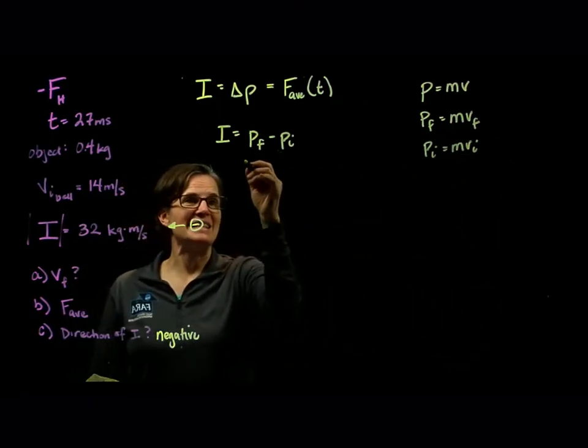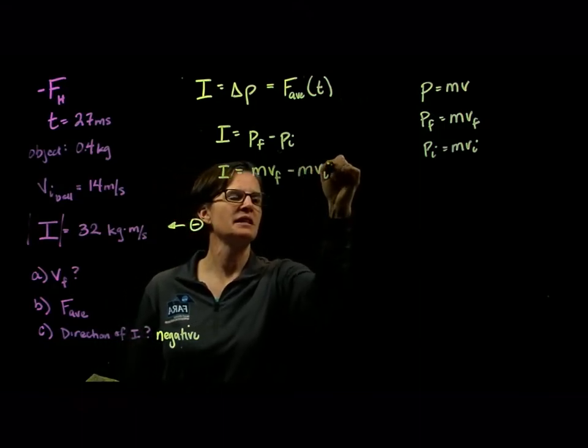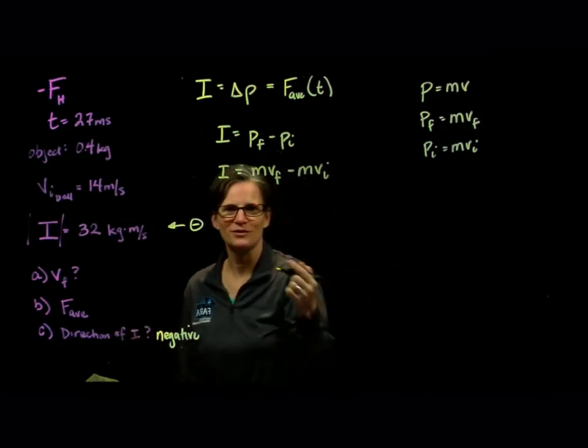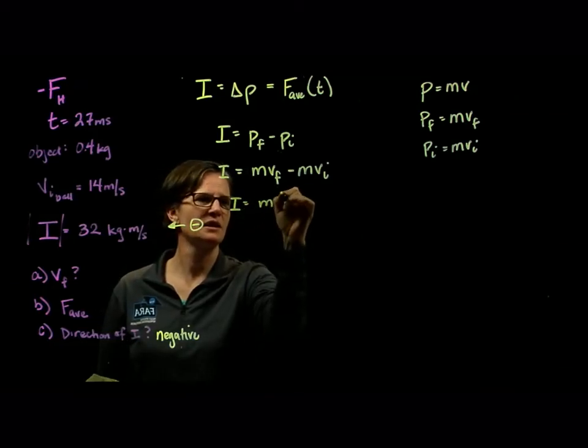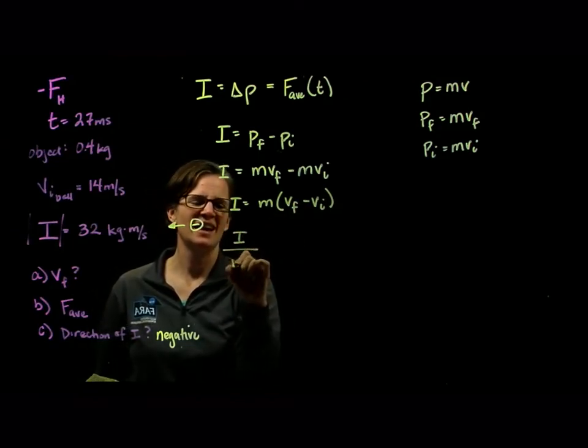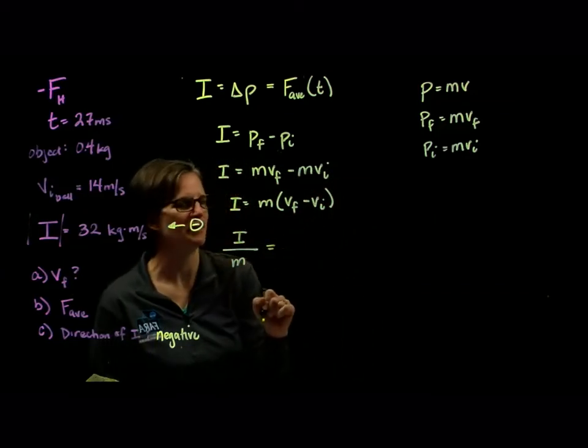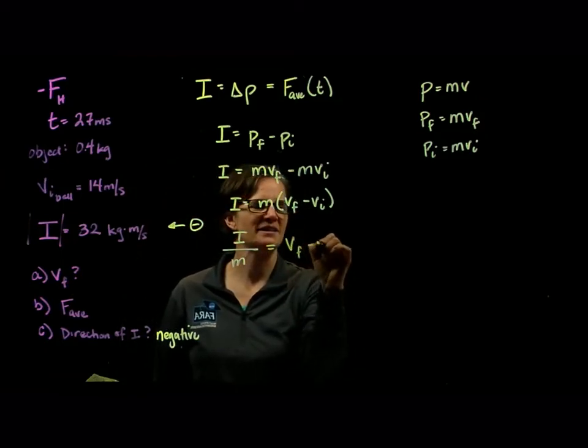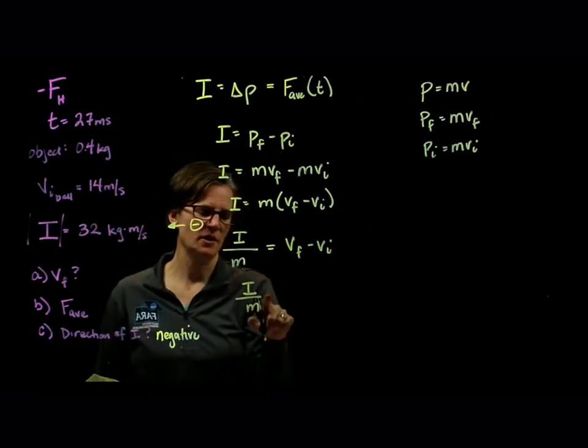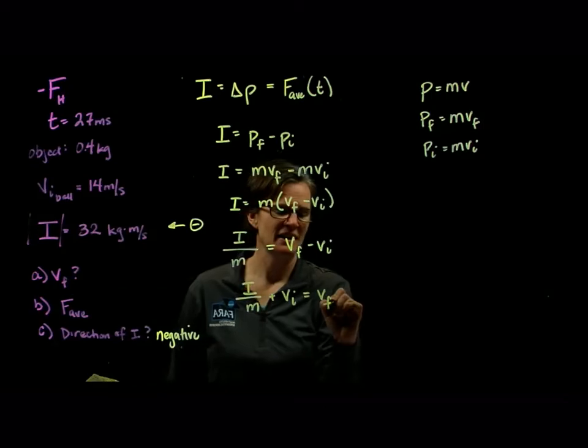So using that idea for our impulse, we have that our impulse is equal to the mass times the final velocity minus the mass times the initial velocity. And for part one, we want to know what that final velocity is. So we can solve for final velocity. We have impulse, I'm going to pull the masses out, we get v final minus v initial. Divide both sides by the mass. We get v final minus v initial. We can add v initial to both sides. So the impulse divided by the mass plus the initial velocity is going to give us the final velocity.